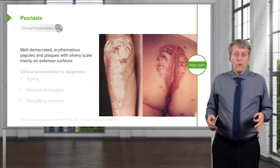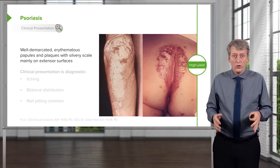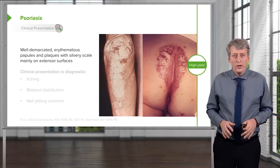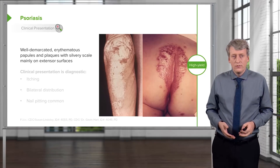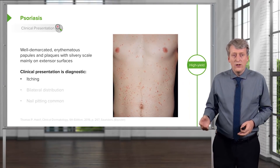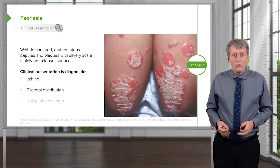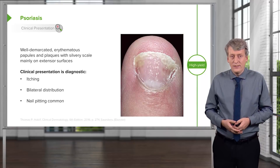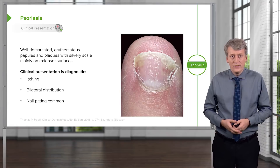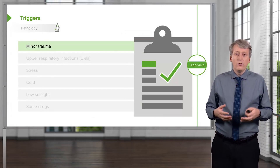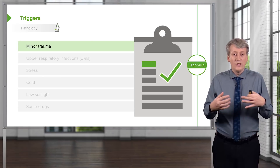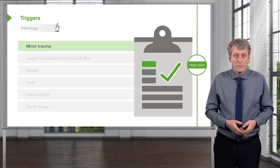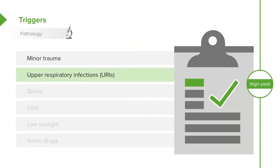Psoriasis is generally a well-demarcated erythematous papular lesion with plaques and a silvery scale, mainly on extensor surfaces. The clinical presentation is diagnostic. They will have itching, generally a bilateral distribution, and you may see nail pitting on their nail exams. Psoriasis is generally triggered by some underlying problem — patients have flares from minor trauma, upper respiratory infections, stress, cold, low sunlight levels, and some medications.